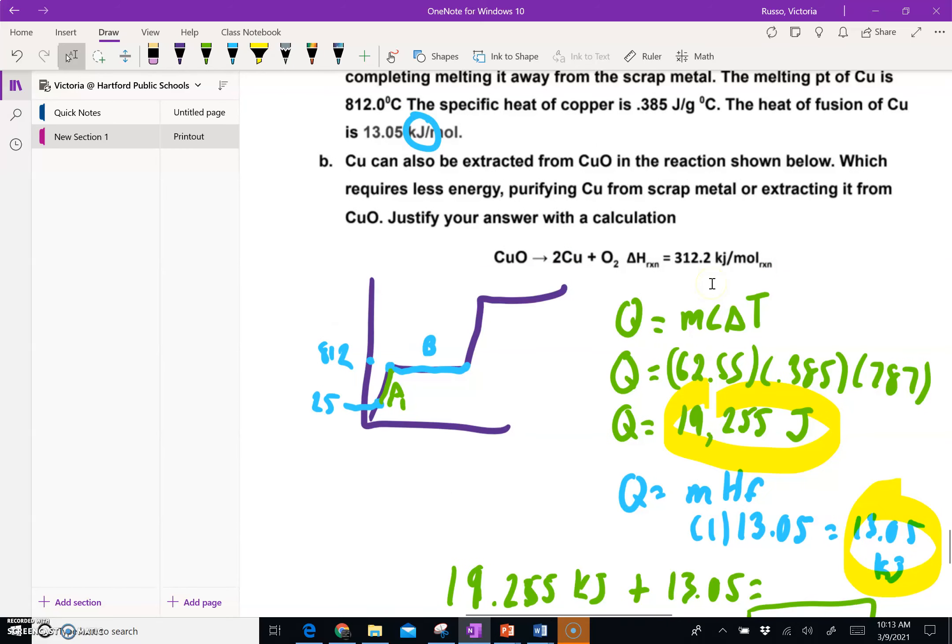Now it says, and this was easier, B was worded confusingly but easier. Cu can also be extracted from copper oxide or CuO in the reaction shown below which requires less energy, purifying Cu from scrap metal or extracting it from CuO? Justify your answer with a calculation. This is the delta H of the reaction as it's written. So as this reaction is written, it takes 312.2 kilojoules of energy. But as you see, this produces two moles of copper.